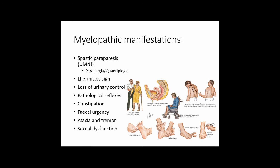Myelopathic manifestations of MS are primarily upper motor neuron signs — spasticity rather than flaccid weakness — which may lead to spastic gait, paraplegia, or quadriplegia as the disease progresses. Lhermitte's sign: when the patient looks down then up, they may feel electric shock sensations down the arm and back. There is also urinary incontinence, pathological reflexes such as the Babinski reflex (upgoing plantar), ankle clonus, and constipation or fecal urgency.